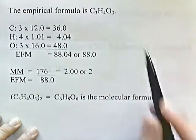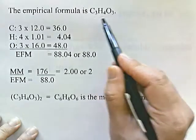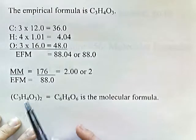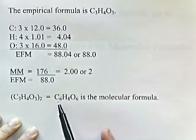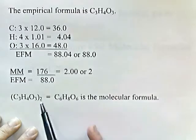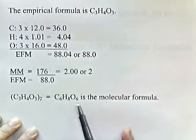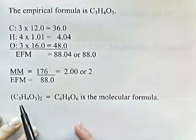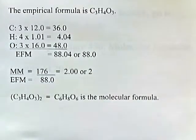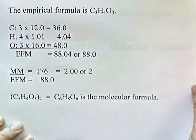We multiply all subscripts in the empirical formula C3H4O3 by 2, distributing the 2 to get C6H8O6. That is the molecular formula and our answer. This problem is really just a combination of two types: finding the empirical formula, and then using it to find the molecular formula.